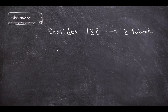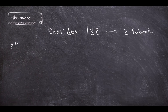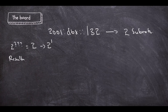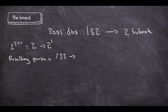Let's look at another example. We have a /32 and we want to create two subnets. How many bits do we need for two subnets? Two to the power of one gives us two, so we need just one bit. That means the resulting prefix will be a /33, because 32 plus 1 bit gives you the /33.